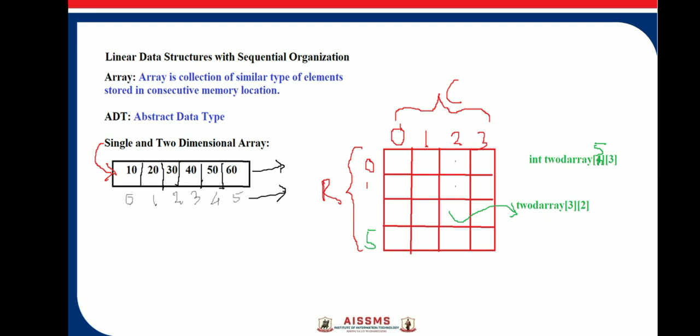In this case, it's written as 'int two_array[5][3]', where the array size is written in square brackets.